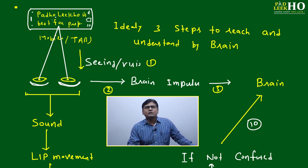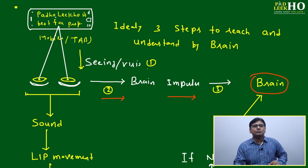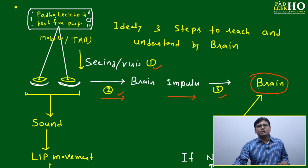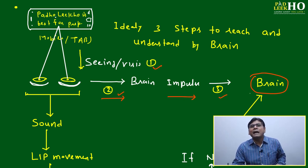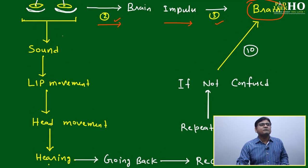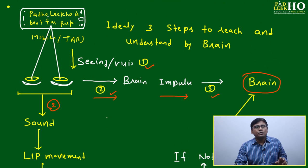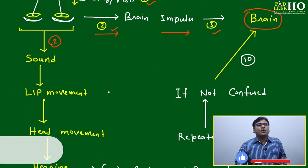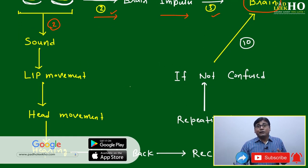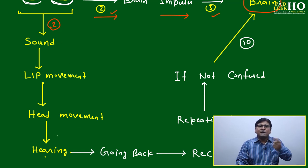Let's understand step by step what actually happens when you read. Ideally: you see the content, a brain impulse is created, and it is sent to the brain — three steps. But for most average readers, after seeing (step one), they speak aloud or move their lips (step two), then some sound is created, the head may also move, and then they try to hear whatever they've spoken. So senses are being diverted everywhere.